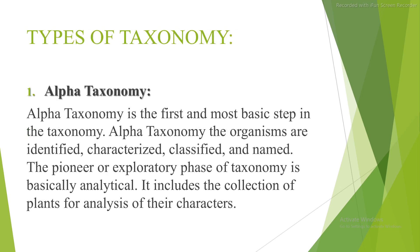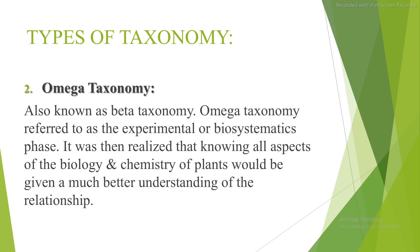Regarding types of taxonomy: the first type is alpha taxonomy, which is the first and most basic step in taxonomy. In alpha taxonomy, organisms are identified, characterized, classified, and named. This pioneer or exploratory phase is basically analytical and includes the collection of plants for analysis of their characters. The second type is omega taxonomy, also known as beta taxonomy, which refers to the experimental or biosystematics phase, realizing that knowing all aspects of biology and chemistry of plants gives a much better understanding of relationships.